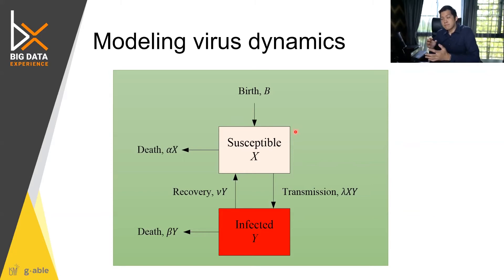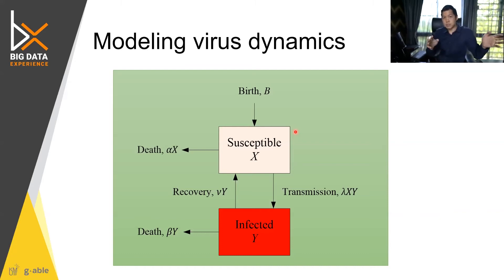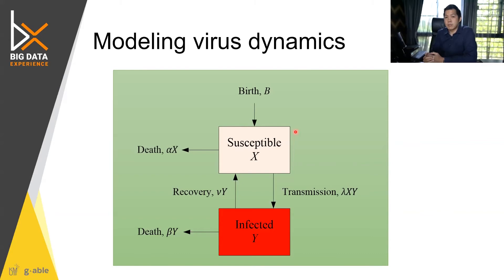With PCR testing, you need to extract RNA, chop it into pieces, and measure specific locations to identify the virus — an expensive process requiring primers and specialized equipment. Antibody detection, by contrast, is like a pregnancy test: you measure the antibody in your blood, and it is much cheaper — around one hundred something — a significant cost saving.